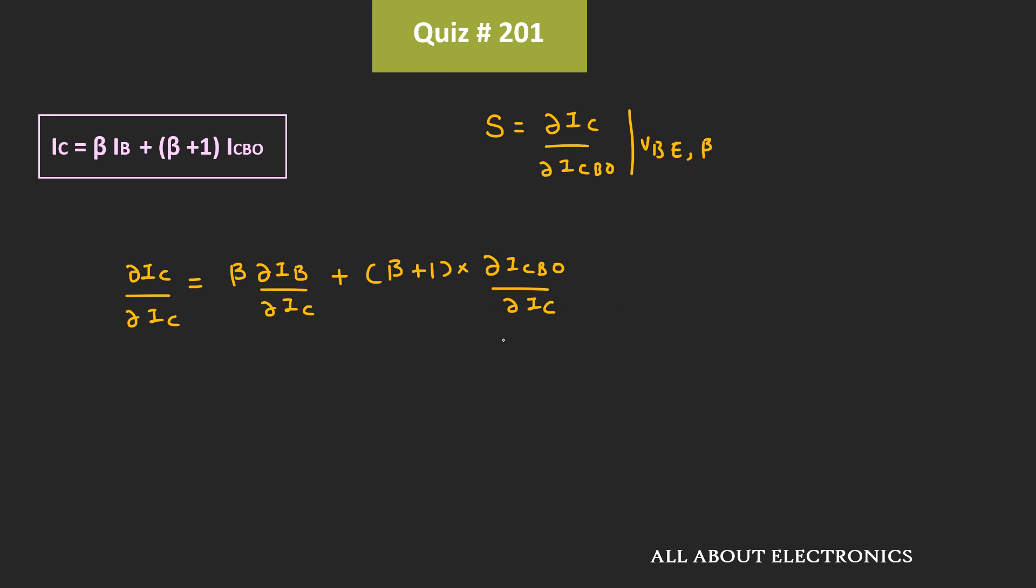Now, if you notice over here, this dIc divided by dIcbo is equal to S. That means this term is equal to 1 divided by S.